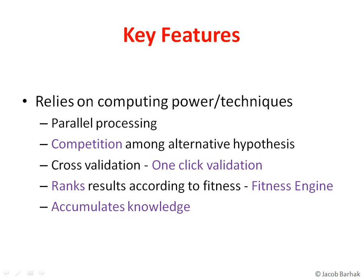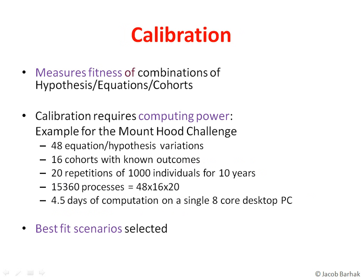The reference model is designed to accumulate knowledge by adding more and more equations and more and more population sets. The calibration process measures the fitness of combinations of hypotheses — such as biomarker changes and risk equations — against multiple population cohorts with known outcomes. The calibration requires a lot of computing power due to all the variations that are tested.